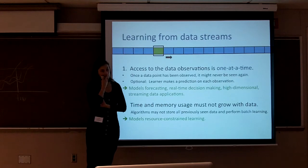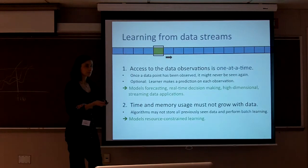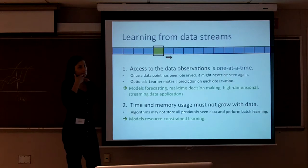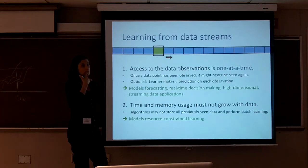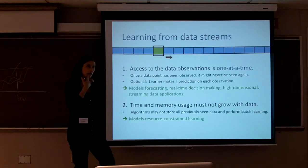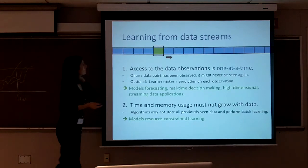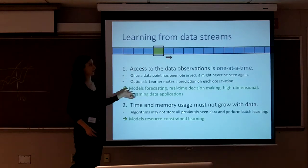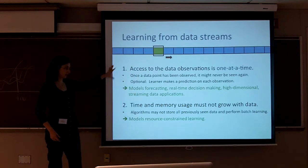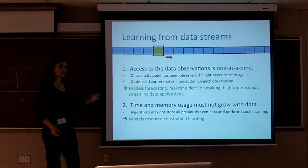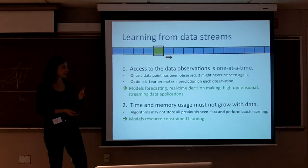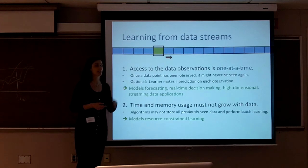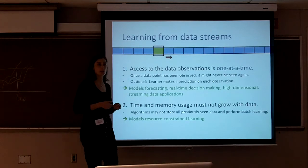An audience member asks: is the algorithm able to discover a new dimension which would help with classification, or are the number and types of parameters given at the beginning by a human? This is an entire field. Many algorithms in my PhD thesis fell under these constraints. I'm about to talk about a specific algorithm, and then I might be able to answer your question better.